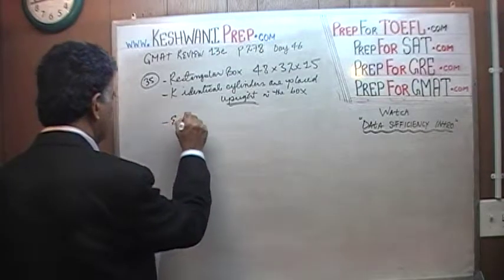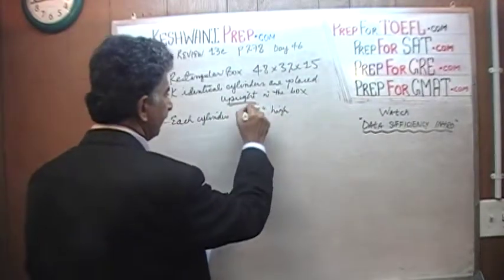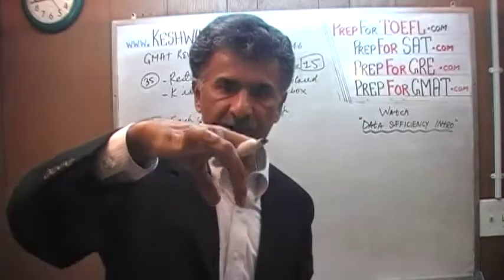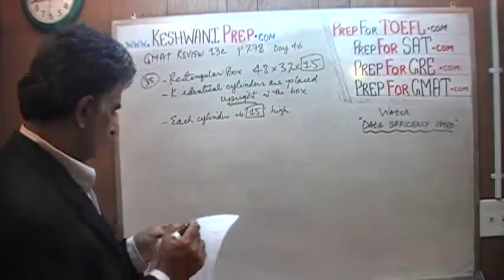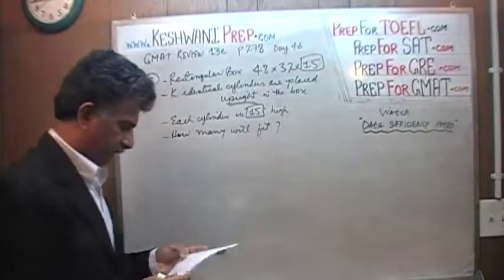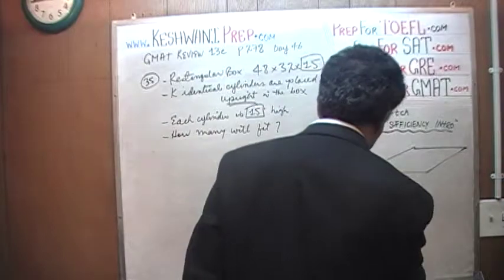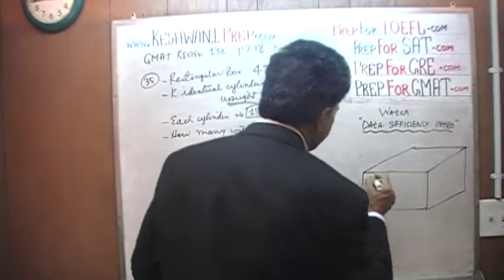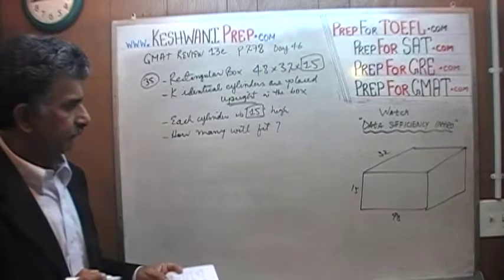Each cylinder is 15 inches high, and the dimensions of the box are 48 by 32 by 15. Hence each cylinder sits straight up and the height of the cylinder is exactly matched by the depth of the rectangular box. The question simply is: how many cylinders will fit? Here is our box — it is 15 inches high with a floor of 32 by 48.